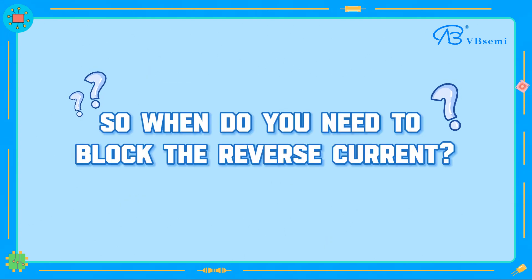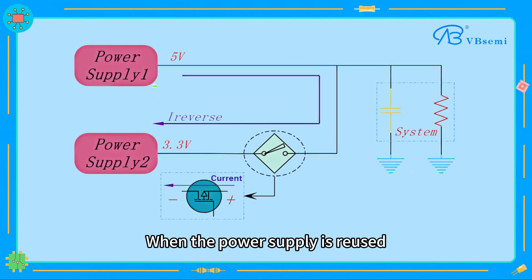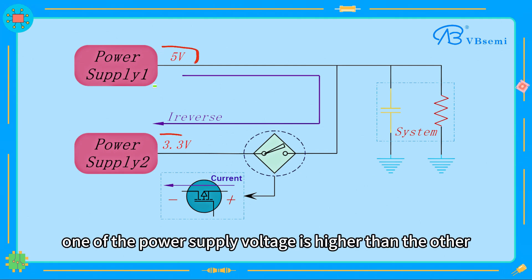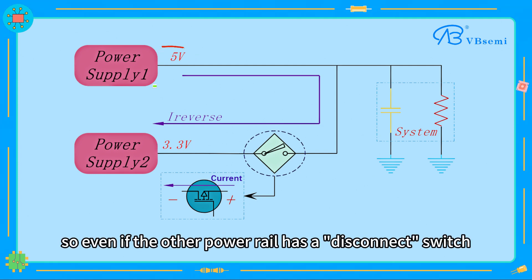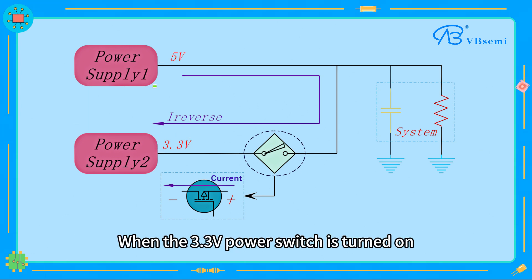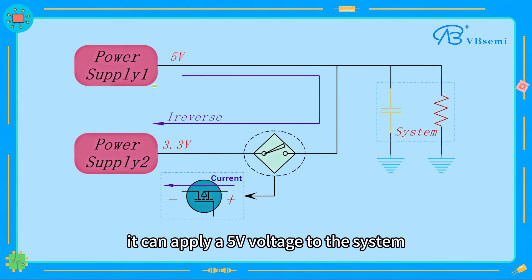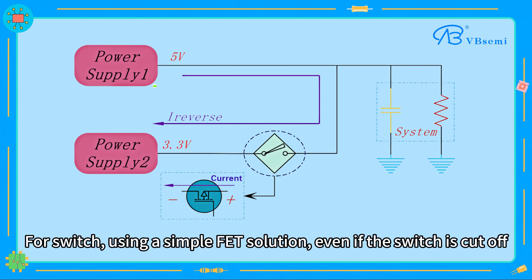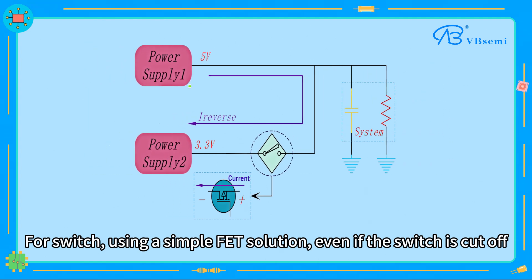When do you need to block reverse current? When power supplies are shared and one supply voltage is higher than the other, even if the other power rail has a disconnect switch, there may be reverse current. For example, when the 3.3V power switch is on, it can apply 5V to the system. For switching, using a simple FET solution, reverse current can occur even if the switch is cut off.